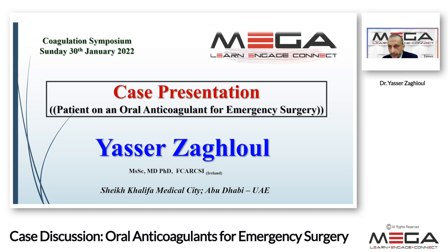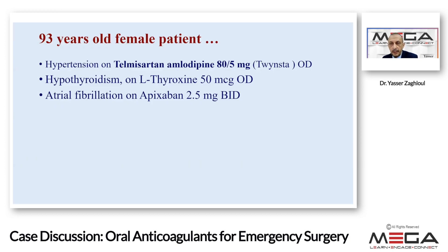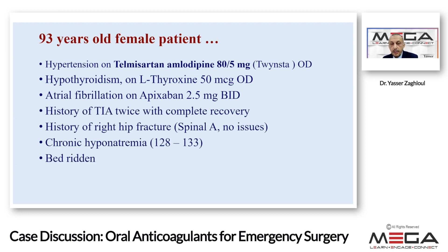She is a 93-year-old lady, hypertensive on ACE inhibitors and calcium channel blockers. She also has hypothyroidism on thyroxine 50 micrograms once daily, and atrial fibrillation on apixaban 2.5 milligrams twice daily. She has a history of transient ischemic attack twice, but fortunately with complete recovery. The origin of these TIAs is micro-thrombi in the left atrium migrating to the brain, which is why oral anticoagulation was initiated — she was transitioned from warfarin to apixaban.